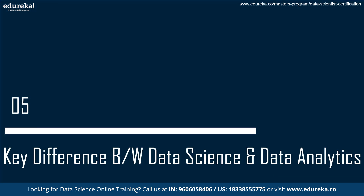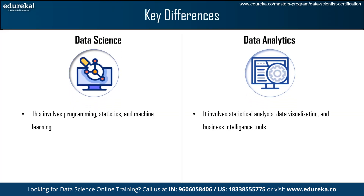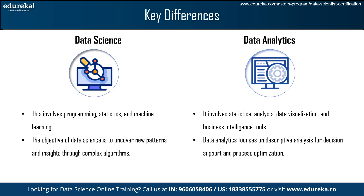Now we will discuss the key differences between data science and data analytics. The first key difference is that data science involves programming, statistics, and machine learning, whereas data analytics involves statistical analysis, data visualization, and business intelligence tools. The next difference is that the objective of data science is to uncover new patterns and insights through complex algorithms, whereas data analytics focuses on descriptive analysis for decision support and process optimization.